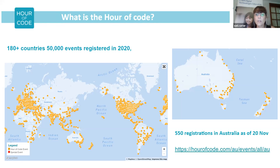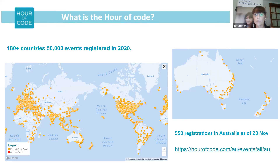To find out if an event has been registered — if you're unsure about your school or your area — go to hourofcode.com/AU for Australia and look at events. You can look at all the events for Australia or indeed across the world.